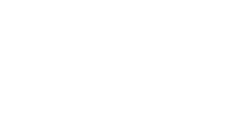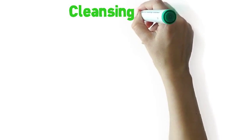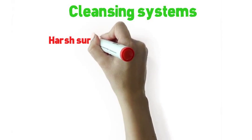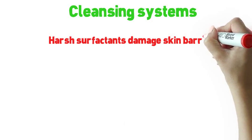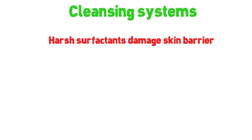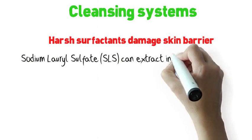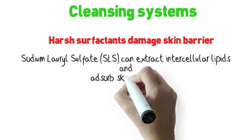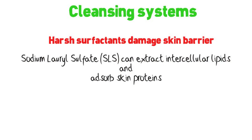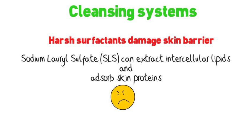To have a well hydrated skin, you must be aware of the cleansing washes you use. Some harsh ingredients are powerful enough to damage the skin barrier. For example, sodium lauryl sulfate is so harsh that it can easily extract lipids and absorb skin proteins, which is not good.